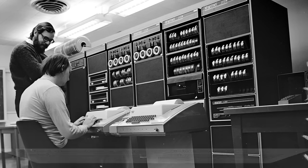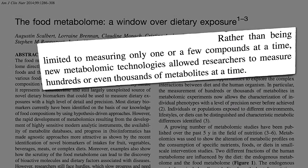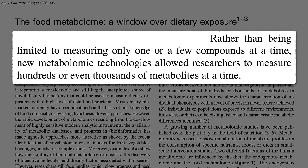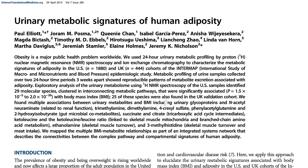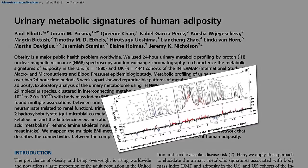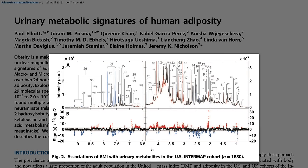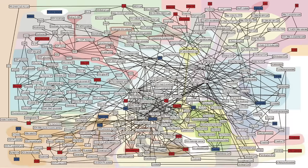New technologies have allowed researchers to measure hundreds, or even thousands, of metabolites at a time, which is good, since more than 25,000 compounds may be entering our body through our diet alone. The data comes out looking like this, which computers can turn into maps that allow researchers to try to piece together connections.